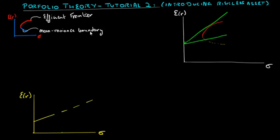In the first tutorial on Portfolio Theory, we learned how investors make use of expected return, volatility, and covariance of risky assets to create an efficient frontier. Any point on the efficient frontier represents an optimal portfolio of risky assets that has higher return for a given level of risk than any other portfolio inside the feasible set. The question is, if we have a risk-free asset, how do investors allocate wealth between risky and riskless assets?